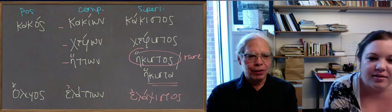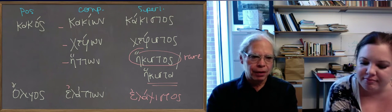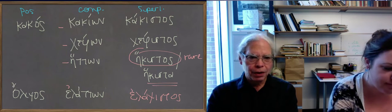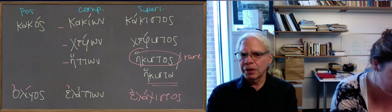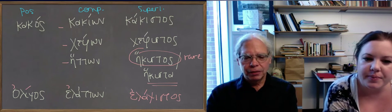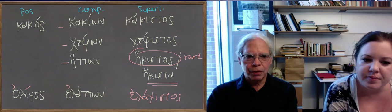So oligos means few. In other words, small in number. Elatton means fewer. And elakhistos means fewest or least. These are really common words for adjectives in Greek and the comparison, the superlatives occur often enough.